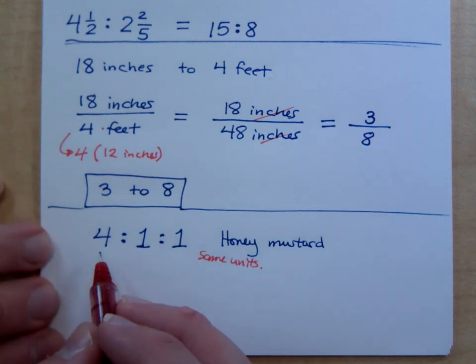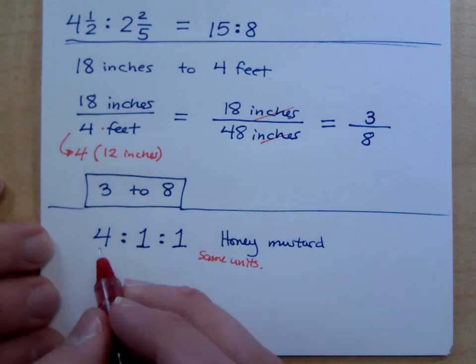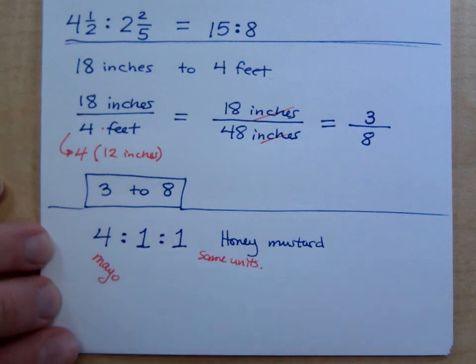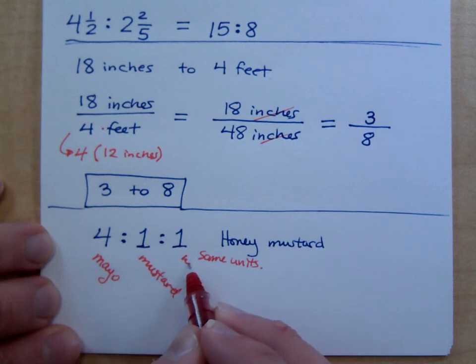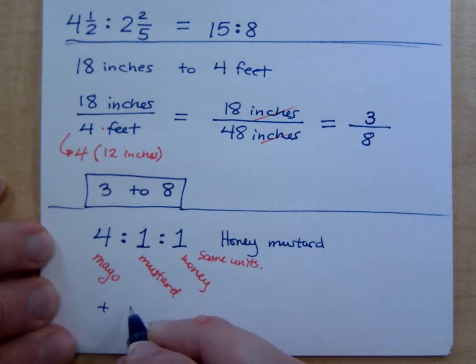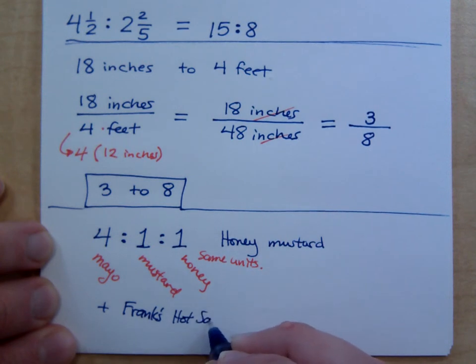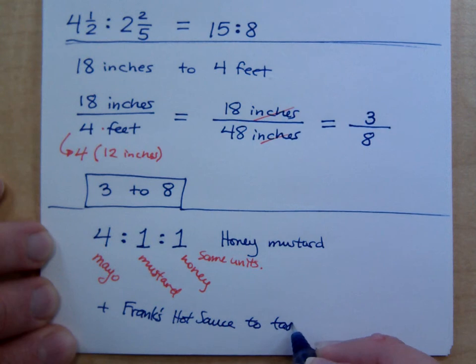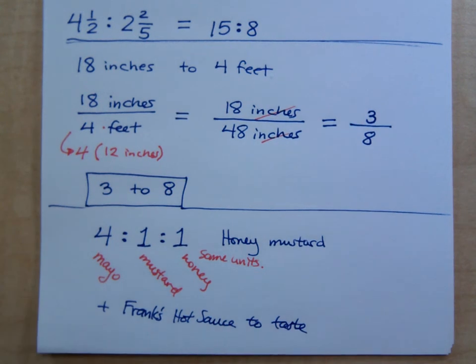So, here it is. It's 4 units of mayonnaise to 1 unit of mustard to 1 unit of honey. That's all it is. Now, that's not quite all. Plus some Frank's Hot Sauce to taste. So, a few drops in there just adds a little bit to it. Don't start dousing it in Frank's Hot Sauce. But a little bit and you taste it and you get it to be just where you want it to be.